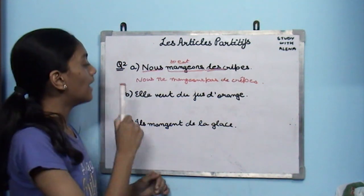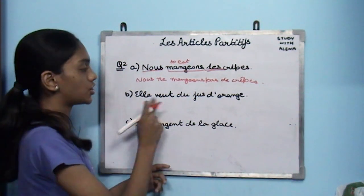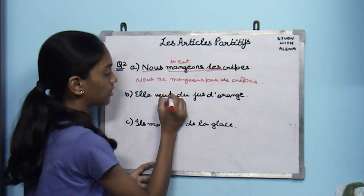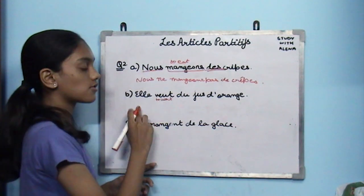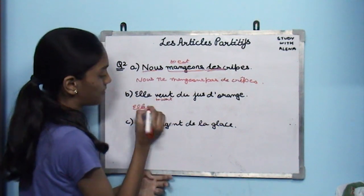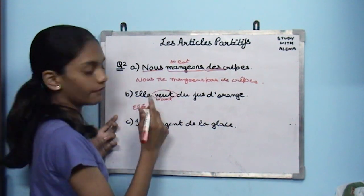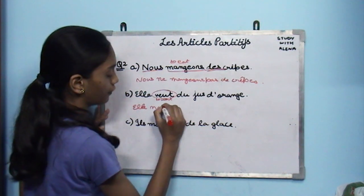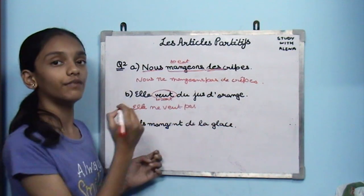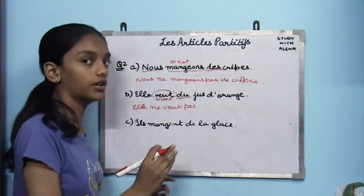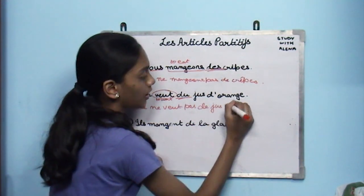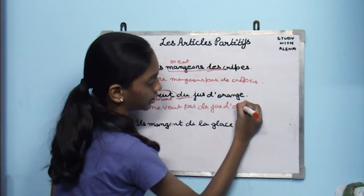Next: elle veut du jus d'orange — she wants orange juice. Vouloir is to want. The negative form: elle — ne — veut — pas. Then the article partitif du changes to de — de jus d'orange.